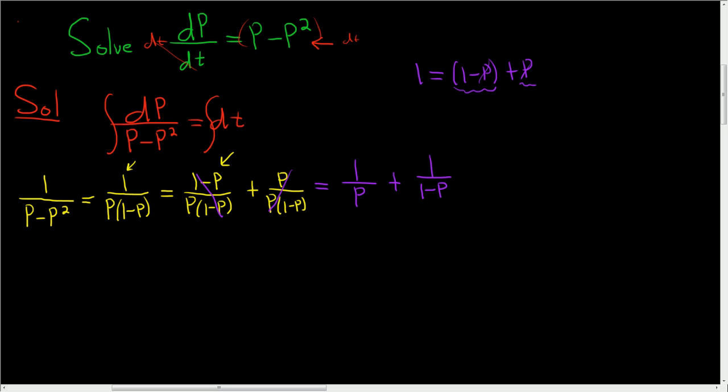So now the integral on the left-hand side becomes 1 over p dp plus the integral of 1 over 1 minus p dp. And then over here we still have dt. So the first integral is going to give us a natural log, as is the second one. But you have to be really careful.